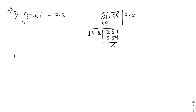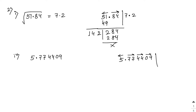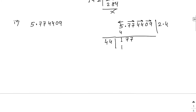Now the last number: 5.774409. Make pairs: before the decimal point it's just 5, and after the decimal: 77, 44, 09. Since 2×2=4, the first digit is 2. Remainder is 1. Bring down 77 giving 177. Double of 2 is 4. Try 44×4=176. Remainder is 1.